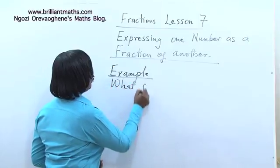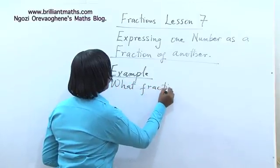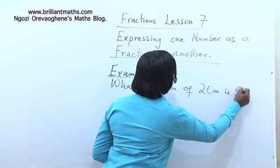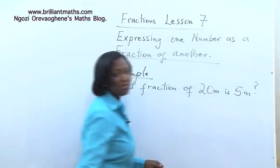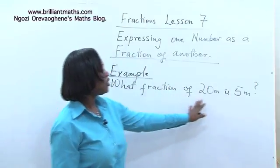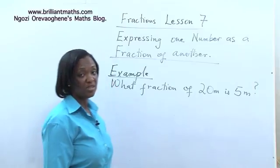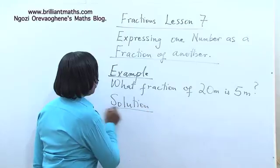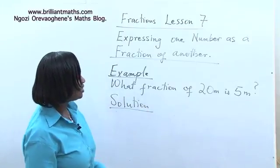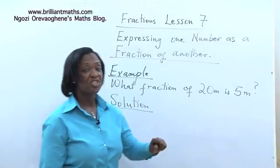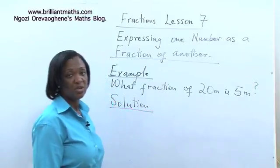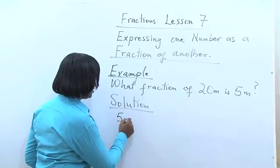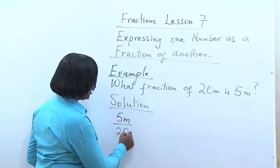For example, what fraction of 20 meters is 5 meters? We want to express 5 meters as a fraction of 20 meters. So 20 meters is our denominator. We have 5 meters over 20 meters.